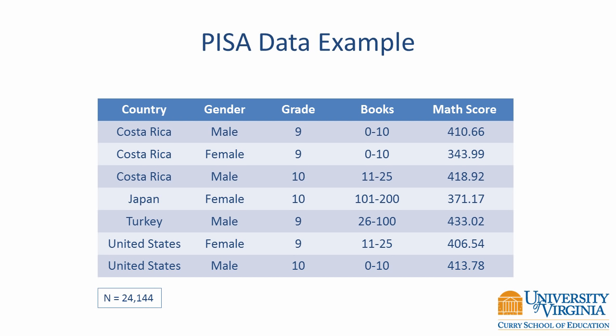According to the documentation, PISA is an international assessment that measures students' ability to use their knowledge and skills to meet real-life challenges. It began in 2000, and it takes place every three years. In each administration, 15-year-old students are tested in reading, mathematics, and science. There are also background questions that ask about an examinee's home, family, and school characteristics. Examples in this session use data from the 2012 PISA mathematics exam and background questions, involving 24,144 examinees from 64 different countries.